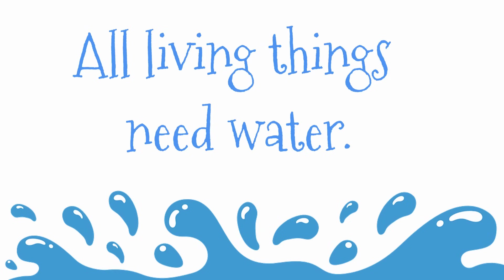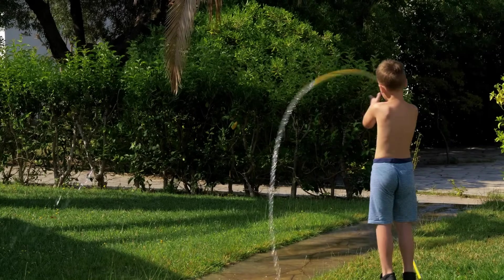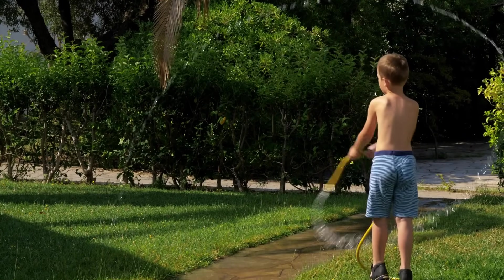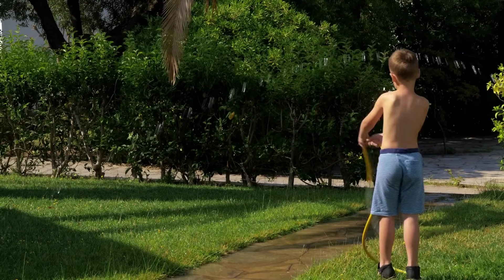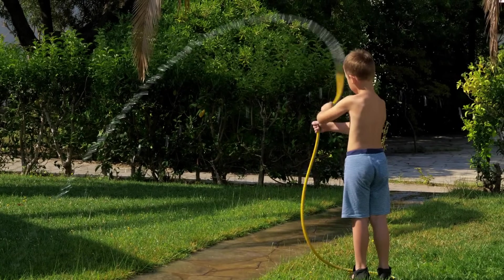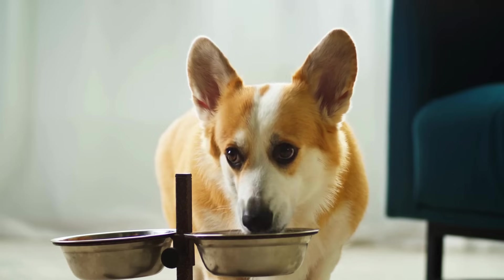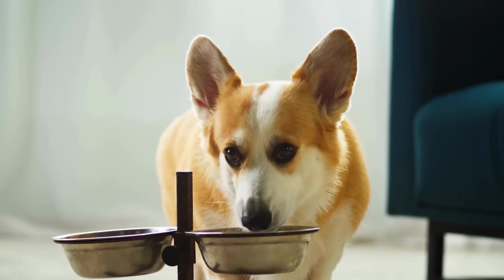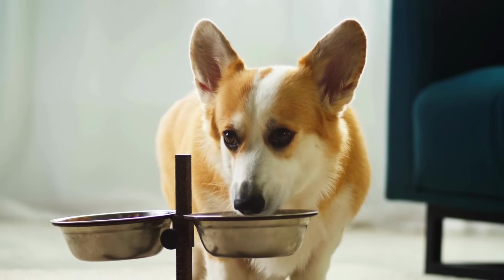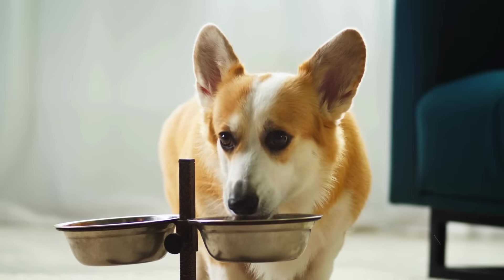Did you like my robot voice? For example, grass needs water. Like all plants, grass is a living thing and needs water to survive. This boy is giving the grass the water it needs and is having fun at the same time. Here's another example — dogs need water. Like all animals, dogs are living things and need water to survive.